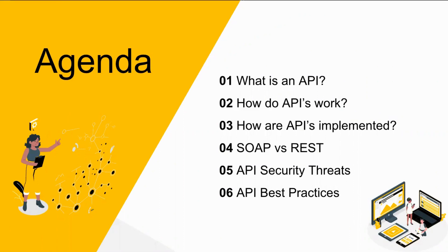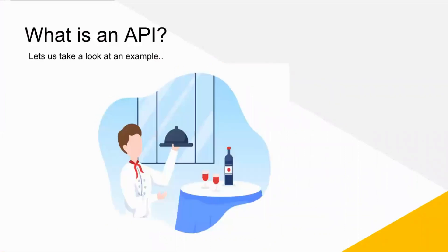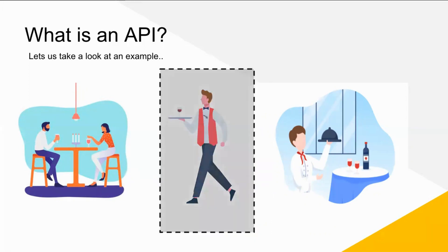Before we jump in, let us understand with a real life example of what an API is. Imagine you are in a restaurant and want to order food, and the chef in the kitchen is present to prepare your food. Now unless your order is communicated to the kitchen, the chef won't get the notification. That critical link is the waiter. He is the bridge between us, the customer, and the chef in the kitchen. He takes your request, tells the kitchen, and then delivers the response back to you — in this case, the food.